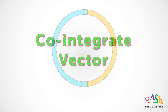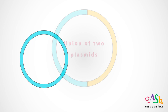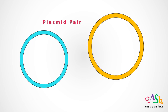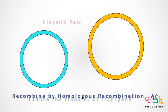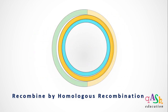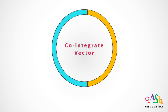A co-integrate vector is formed by the union of two plasmids in a pair that together induce the transfer of a transgene. For that to happen, the two individual plasmids must recombine via homologous recombination, ultimately giving the co-integrate vector.